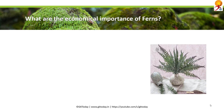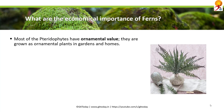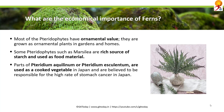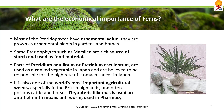What is the economic importance of ferns? Most ferns have ornamental value and are grown as ornamental plants in gardens and homes. Some, such as Marsilea, are a resource of starch and used as food material. Parts of Pteridium aquilinum or Pteridium esculentum are used as cooked vegetables in Japan, but they are also believed to be responsible for the high rate of stomach cancer in Japan, making it debatable whether they should be consumed. It is also one of the world's most important agricultural weeds, especially in the British Highlands, and often poisons cattle and horses.